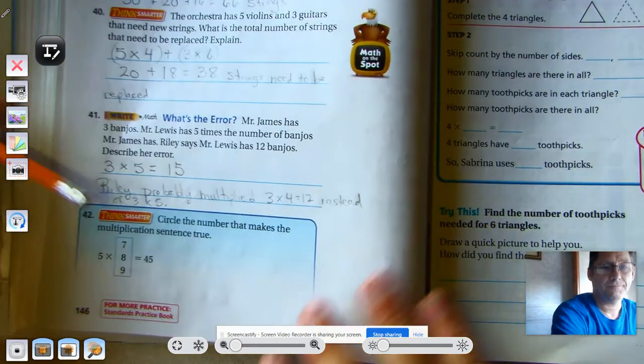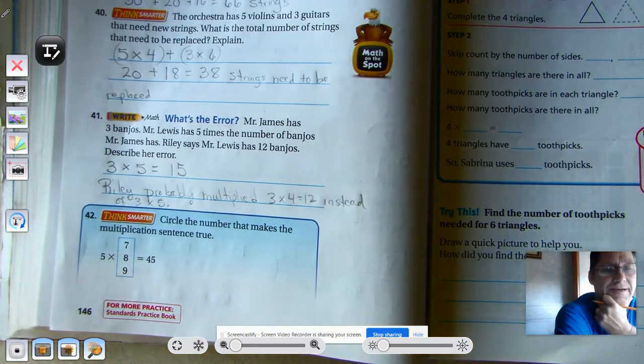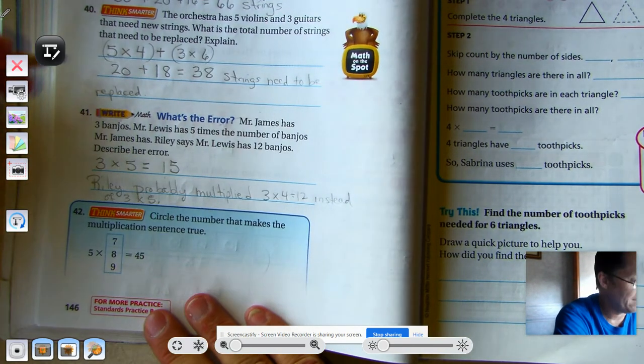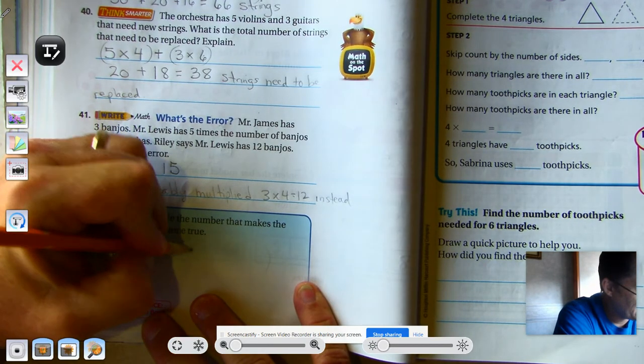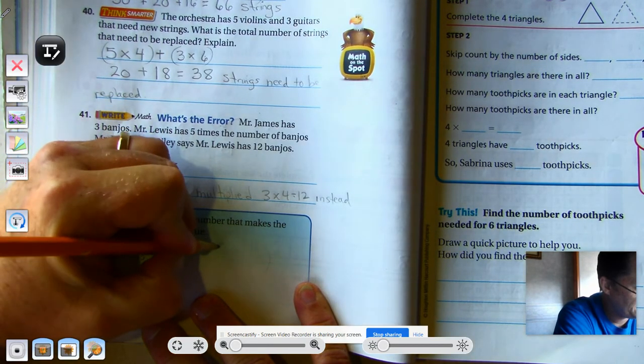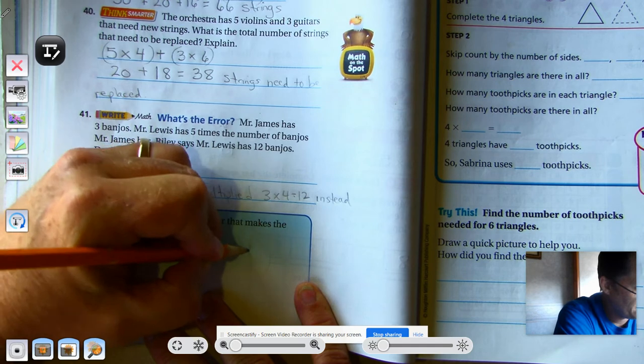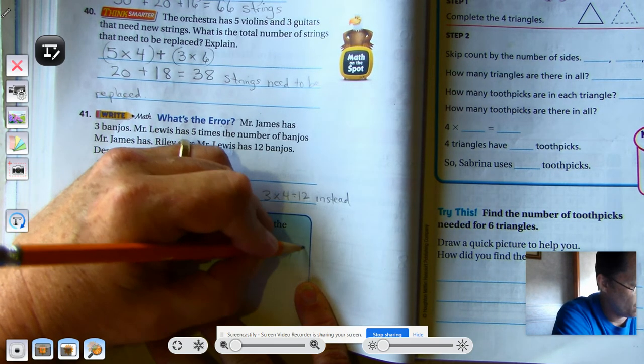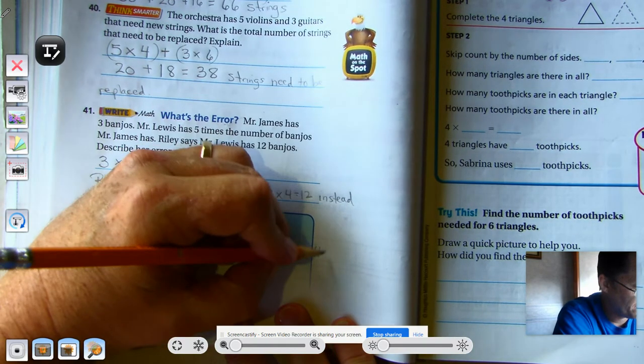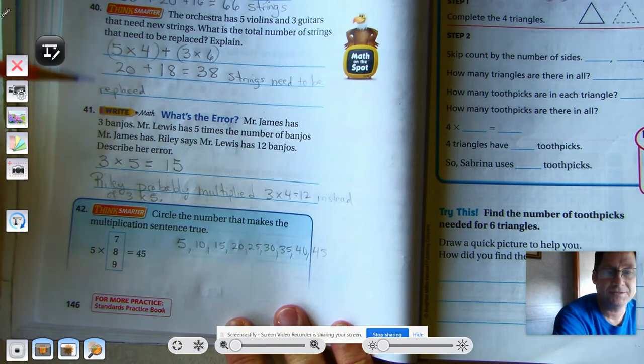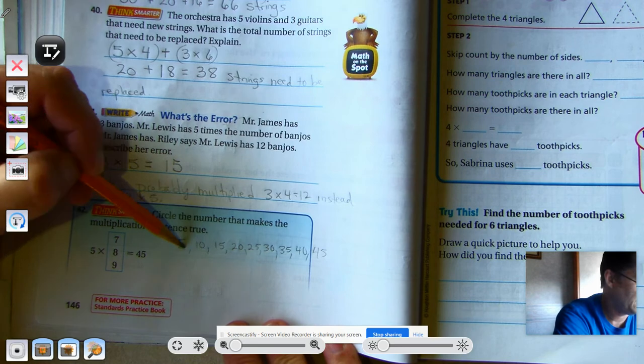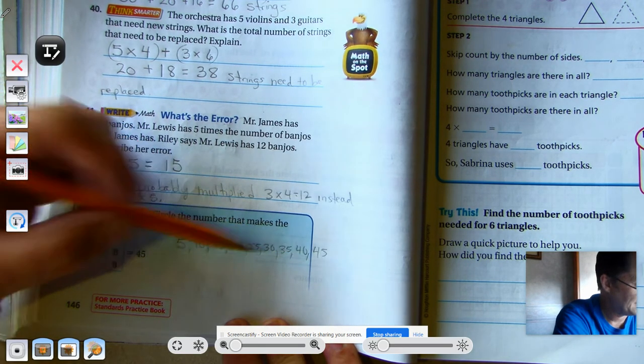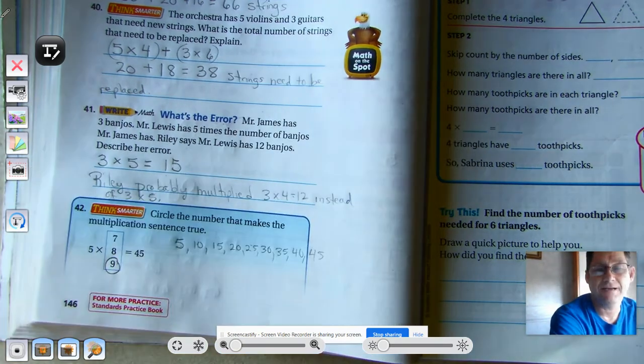All right. Circle the number that makes the multiplication sentence true. 5 times what is 45? Well, 5, 10, 15, 20, 25, 30, 35, 40, 45. So, how many numbers did I use to get to 45? 1, 2, 3, 4, 5, 6, 7, 8, 9. So, 5 times 9 is 45.